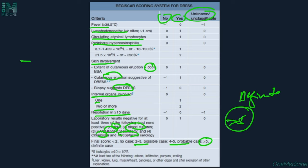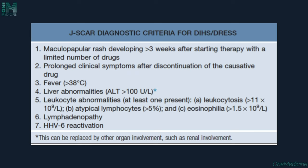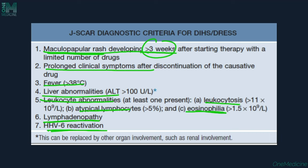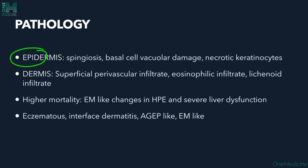The J-SCAR diagnostic criteria require maculopapular rash more than 3 weeks after starting therapy, prolonged clinical symptoms after drug discontinuation, fever above 38°C, liver abnormality with raised ALT, leukocyte abnormalities (leukocytosis, atypical lymphocytes on peripheral smear), eosinophilia, lymphadenopathy, and HHV reactivation.